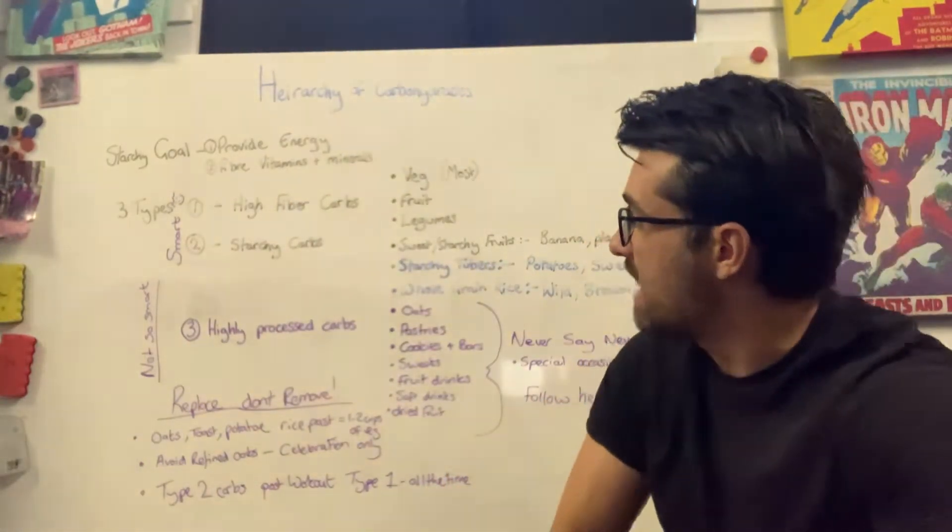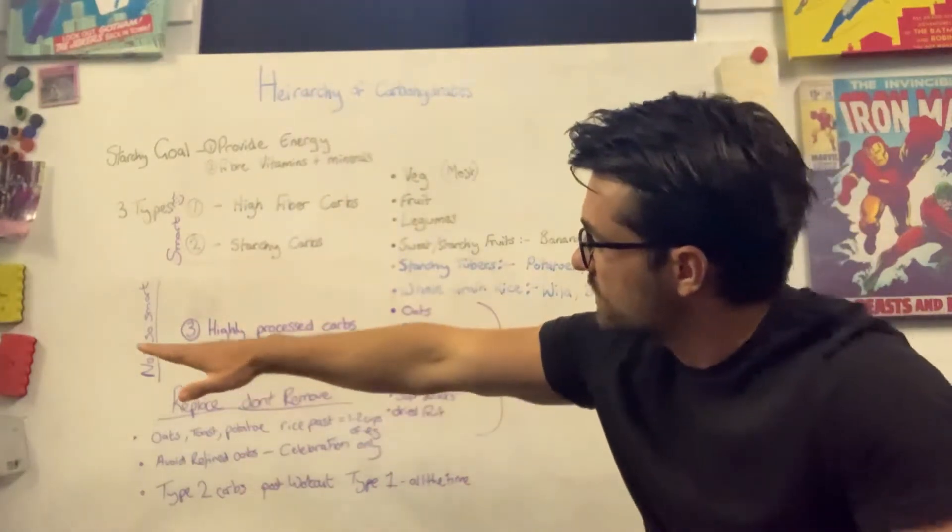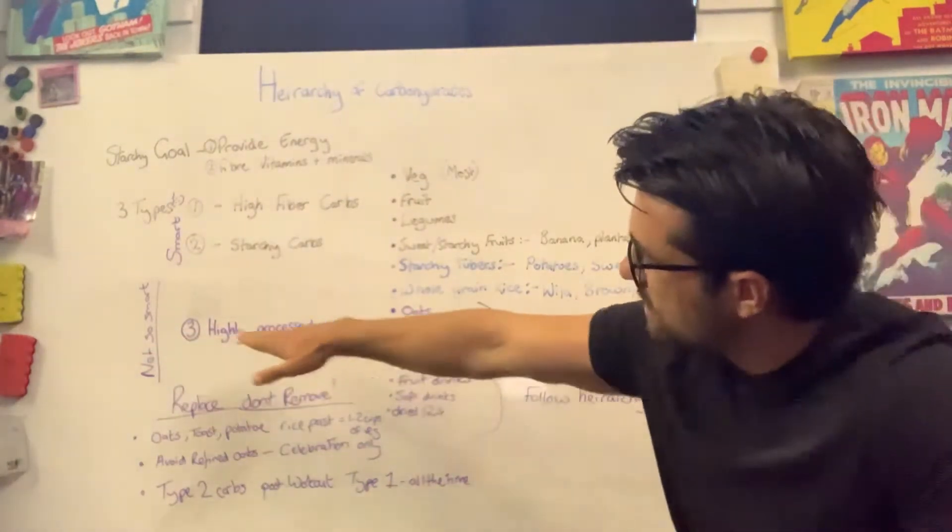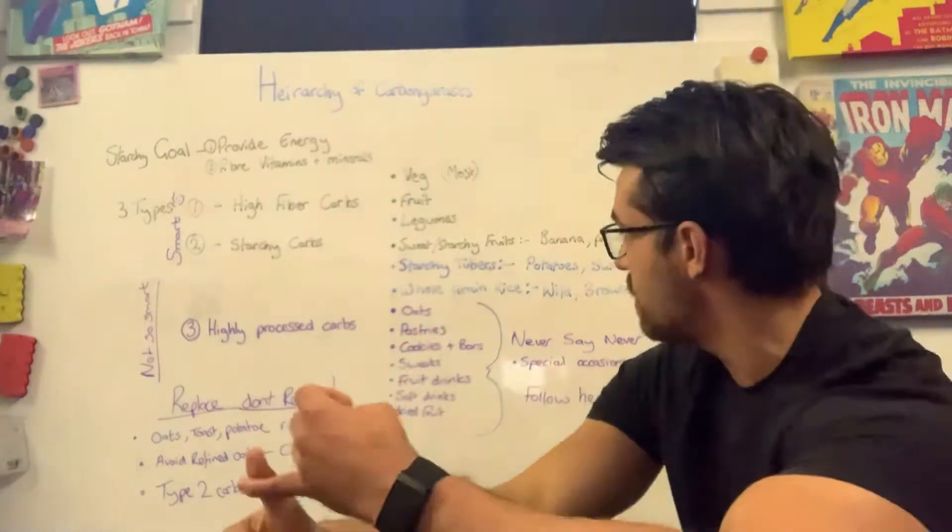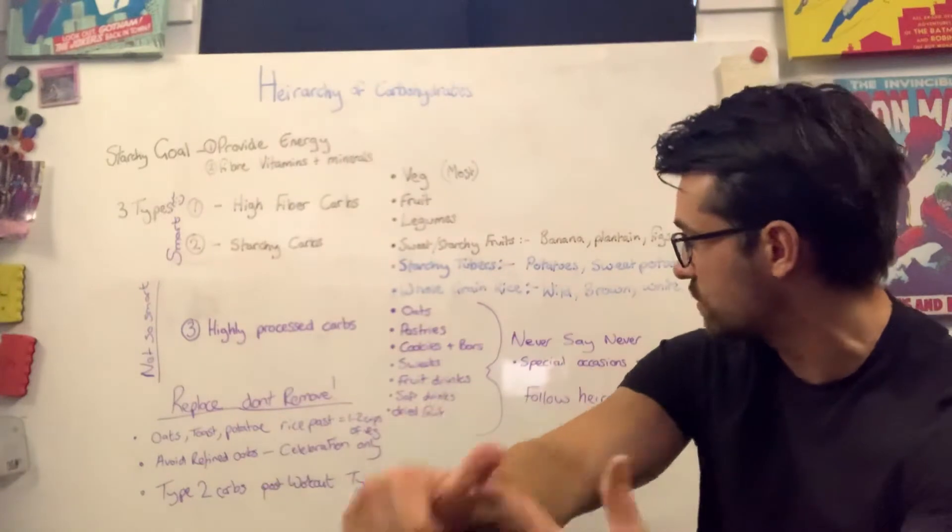And lastly, the bad boys on the menu, the good stuff, the stuff that tastes phenomenal that my body says is not good for my body composition is the highly processed carbohydrates. Things like your pastries, cookies, sweets, fruit drinks, soft drinks, dried fruit.